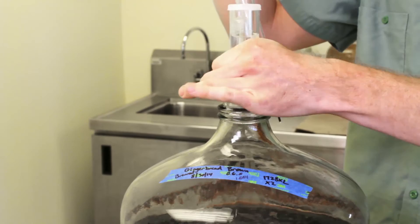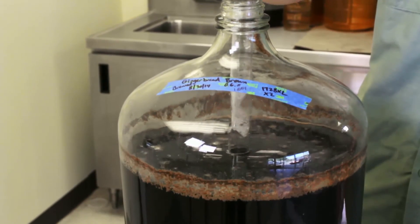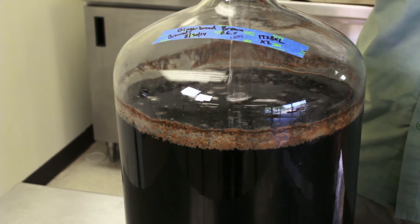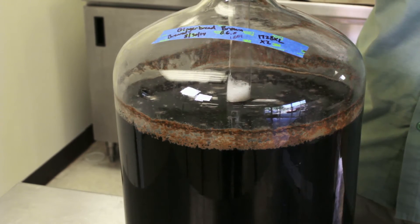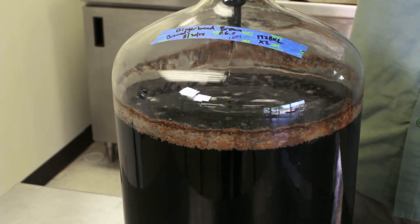First, obtain a sample of your wort. The easiest way to do this is with a sanitized thief. Simply place the thief in your carboy or bucket and allow it to fill. While you could put your sanitized hydrometer directly into a fermentation bucket full of beer, it is not recommended because of contamination concerns.